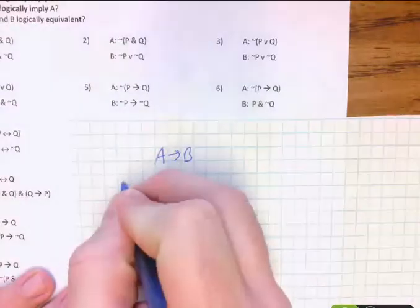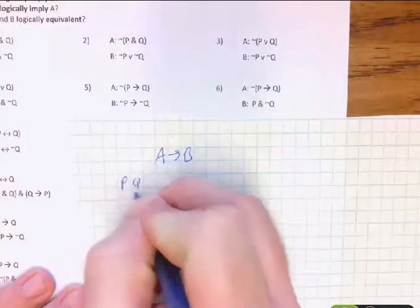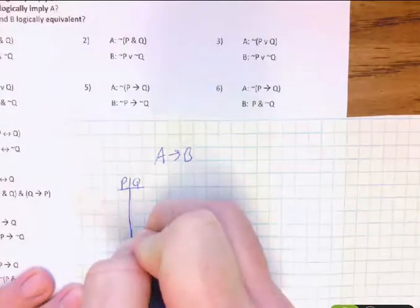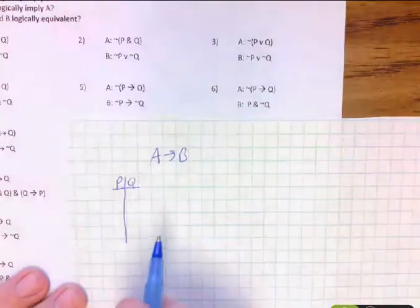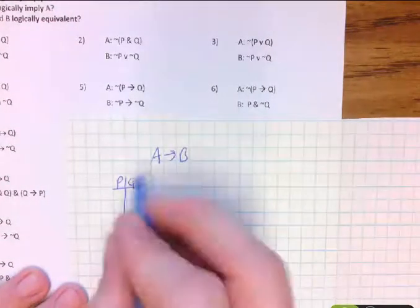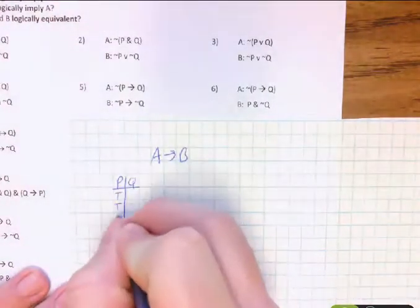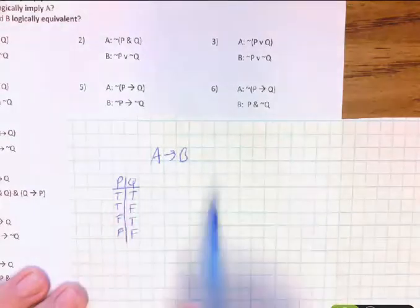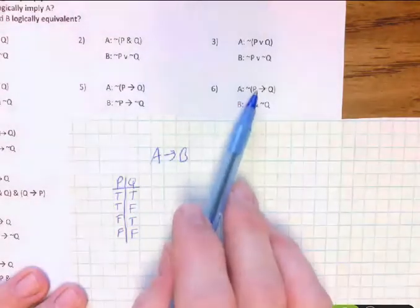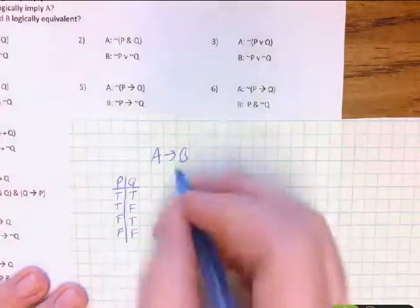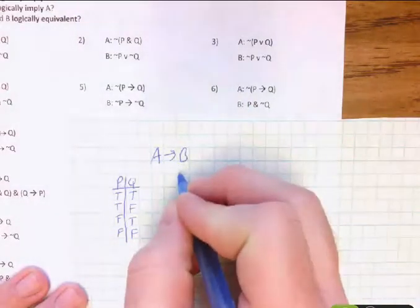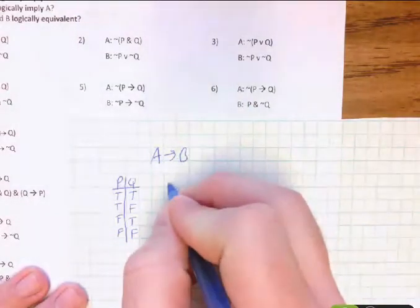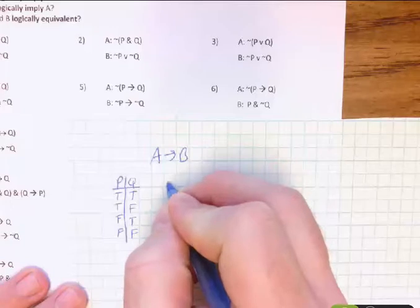All right, so I'm going to have P and Q, and I'm going to do this one all the way through, and then I'll show you what I meant by, you know, you don't always have to show all the steps, but for the first one I will. So true, true, false, false, true, false, true, false.